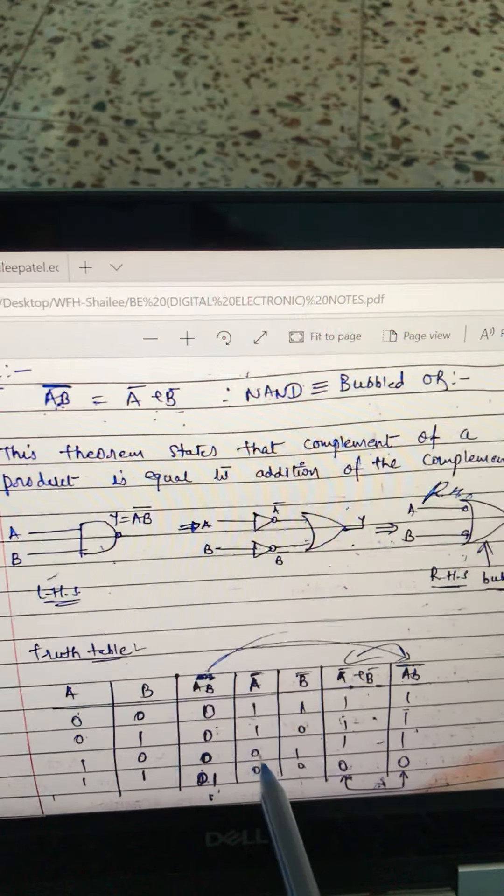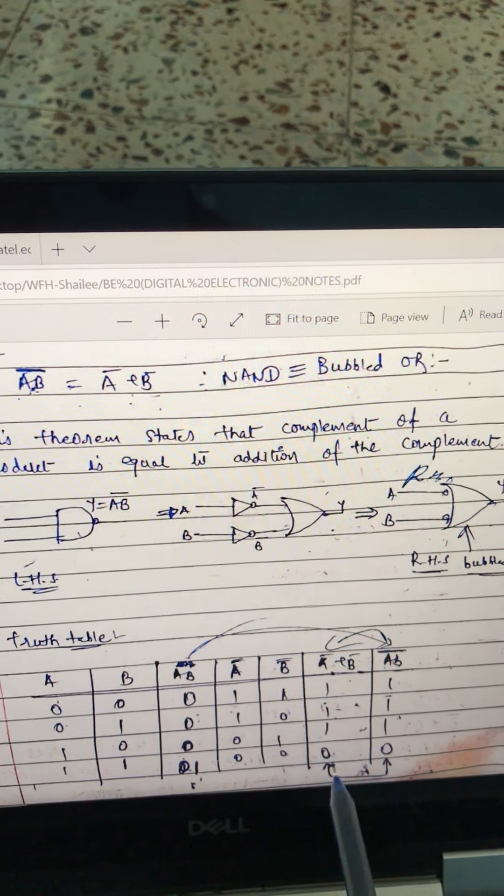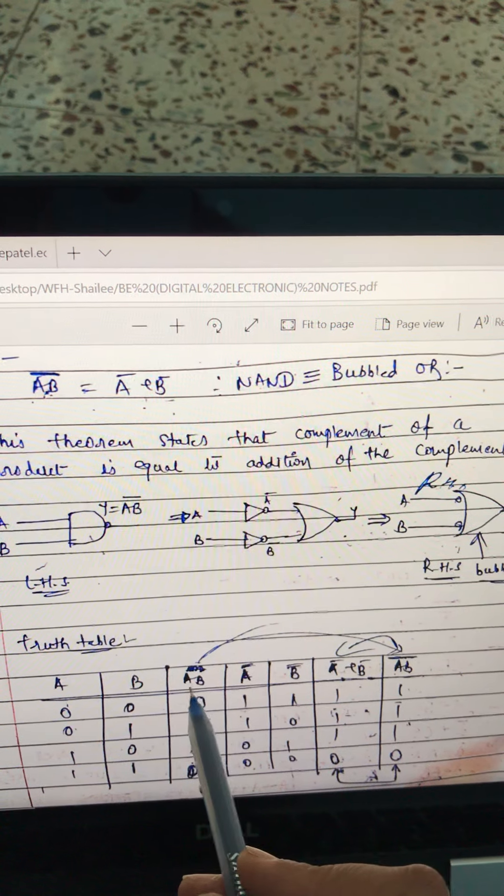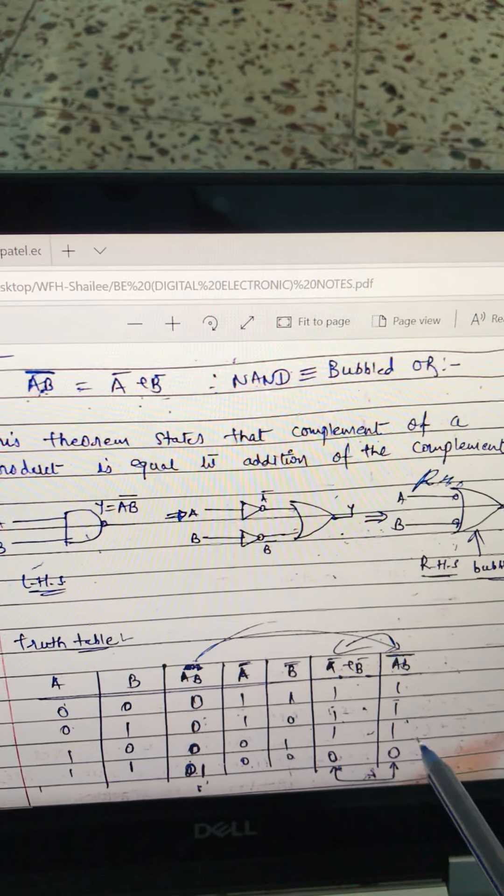So A bar will be invert of A and B bar will be invert of B. Now make addition of this two. So this is your right hand side, A bar plus B bar. And the AB bar dash, that is NAND. So triple zero one. It is NAND gate.